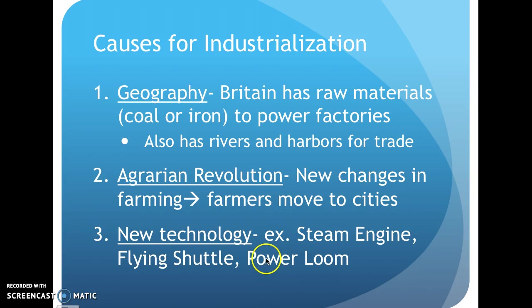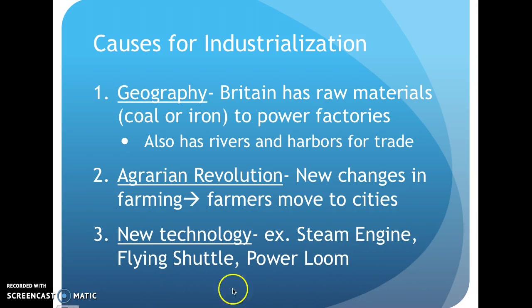Finally, new technology. Without this new technology we would not have an industrial revolution. Probably one of the most important inventions ever is the steam engine, as it was a power source. At this time it powered machines, factories, and even railroads. There was also a flying shuttle and power loom, which are machines found in factories. One of the biggest things we saw were textile machines, which deal with producing cloth — and the flying shuttle and power loom go along with that.